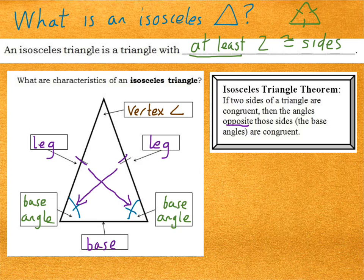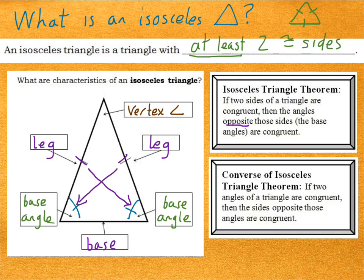It also just so happens that the converse of the isosceles triangle theorem is also true. Can you think of what that might be? The converse of the isosceles triangle theorem says if two angles of a triangle are congruent, then the sides opposite those angles are congruent. In the original isosceles triangle theorem, we're given that the two sides are congruent, and we're then privy to the knowledge that the angles are congruent. In the converse it's the reverse — we are given that the two angles are congruent, and from that we know that the two sides are congruent.